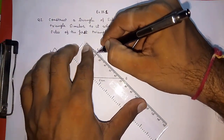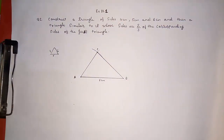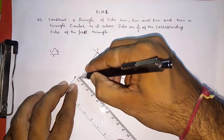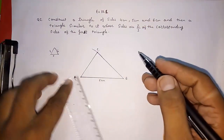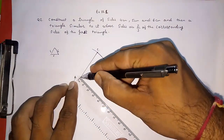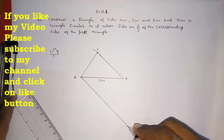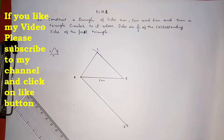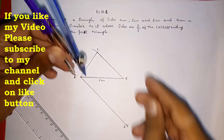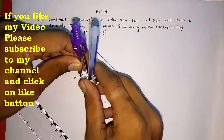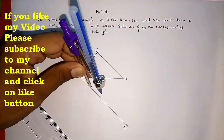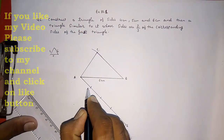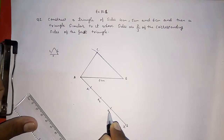This point will be C, so this is our first given triangle ABC. Now we have to draw a similar triangle which is 2/3 of this. We extend a ray from A making an acute angle with AB — it must be less than 90 degrees. We draw this ray AX. Since the denominator is 3, we divide the ray into 3 equal parts by making 3 arcs of any equal measurement, naming the points A1, A2, and A3.